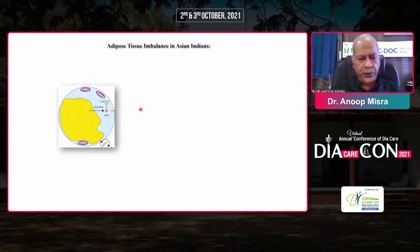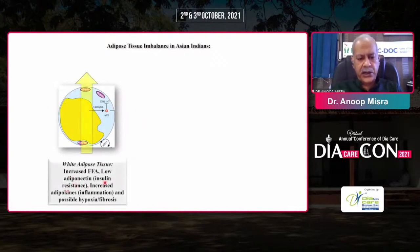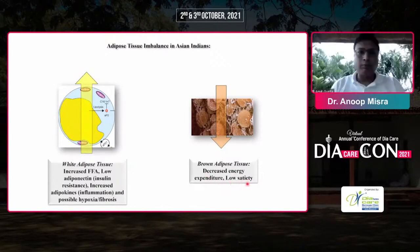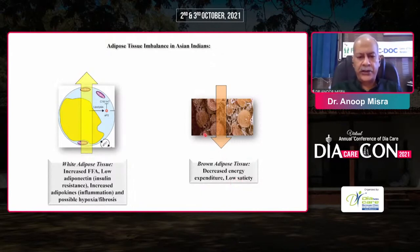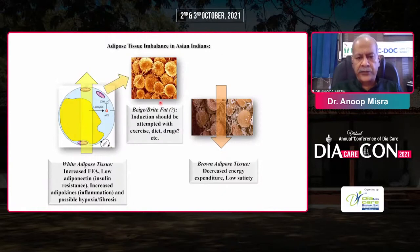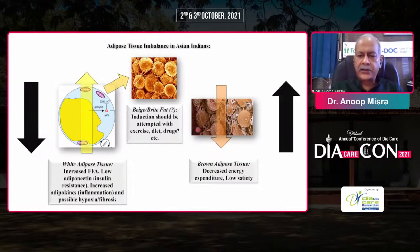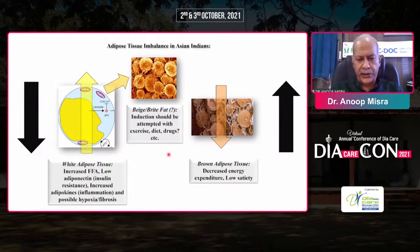In summary: white adipose tissue increases free fatty acids, lowers adiponectin, increases adipokines, inflammation, hypoxia, and fibrosis. Decrease in brown adipose tissue decreases energy expenditure, decreases satiety, and increases weight. Somewhere in between is beige adipose tissue, whose induction should be attempted with the factors we know. In Indian population, white adipose tissue should be decreased — especially from liver and pancreas — and brown adipose tissue should be increased. More research in Indian population is needed.